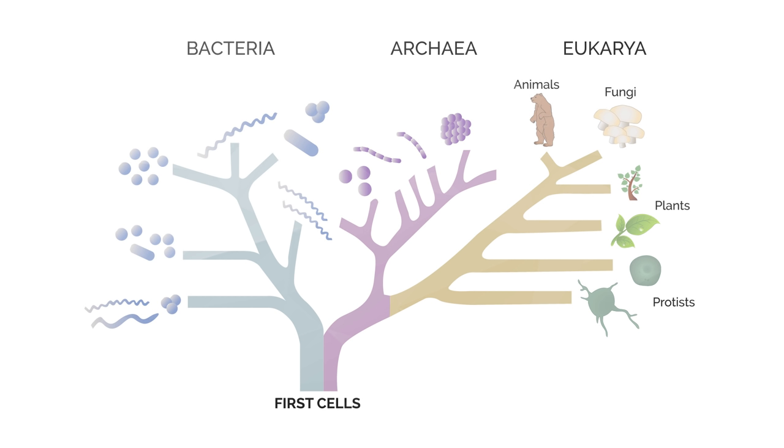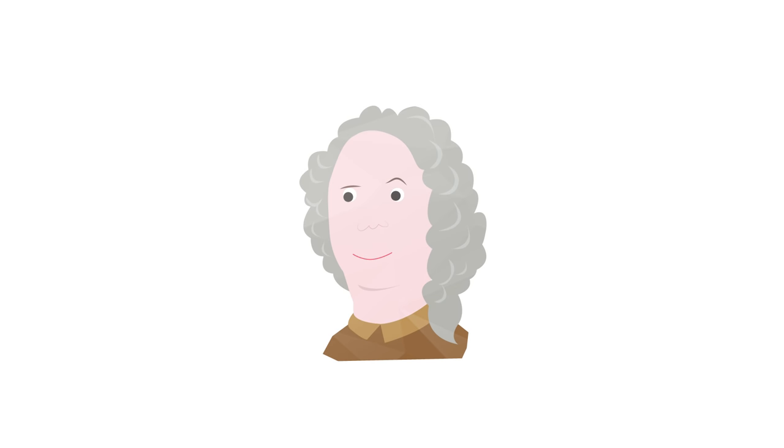Modern systems of biological classifications, or taxonomy, are based on the work of a pioneering 18th century scientist called Carl Linnaeus.